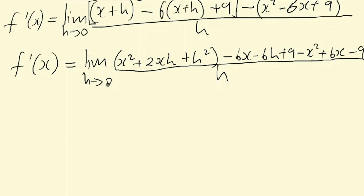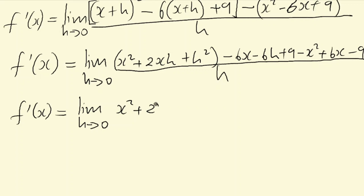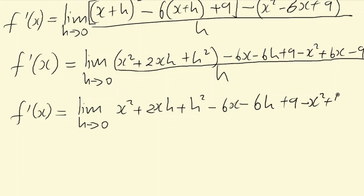We divide the whole thing by h. So f prime of x equals the limit as h approaches 0 of: x squared plus 2xh plus h squared minus 6x minus 6h plus 9, minus x squared plus 6x minus 9, all divided by h. Now we group like terms — looking at x squared: we have positive x squared and negative x squared, they cancel to zero.